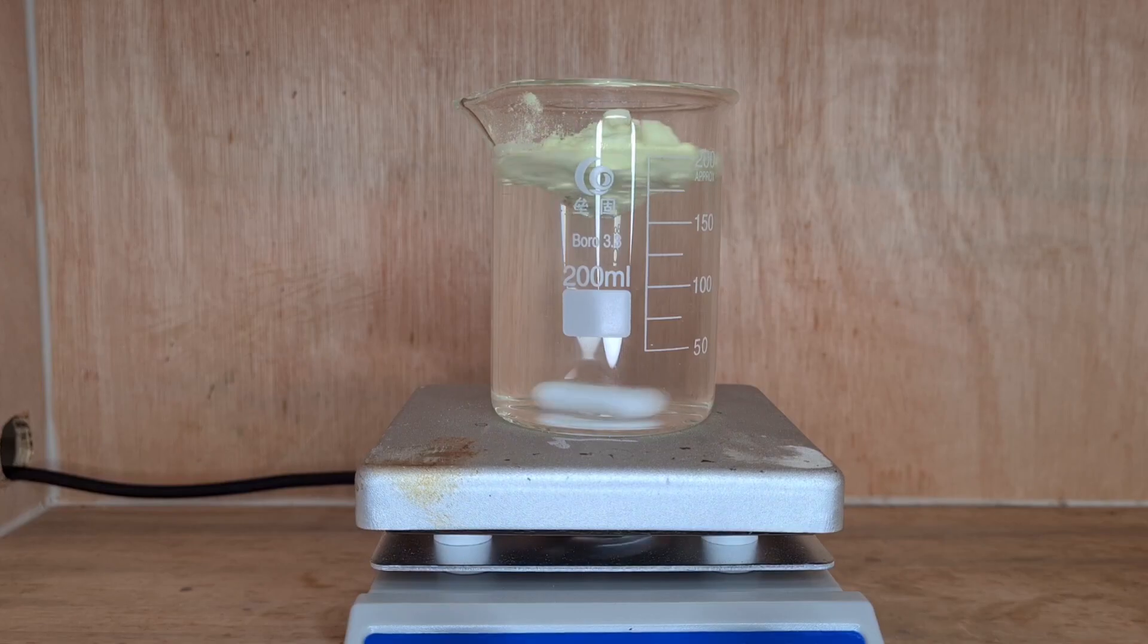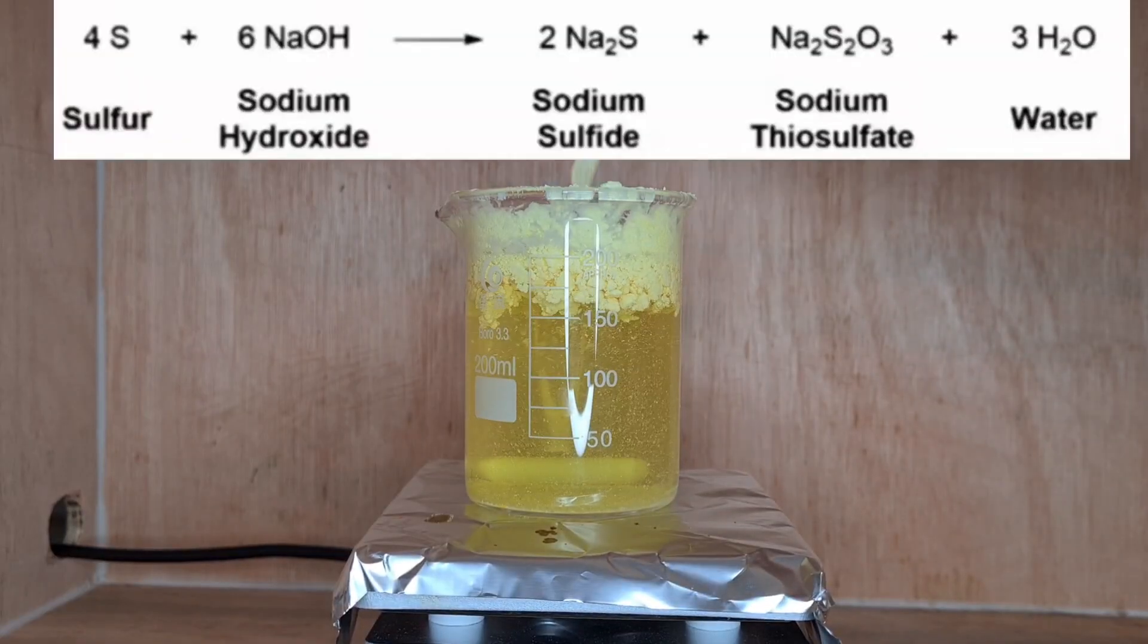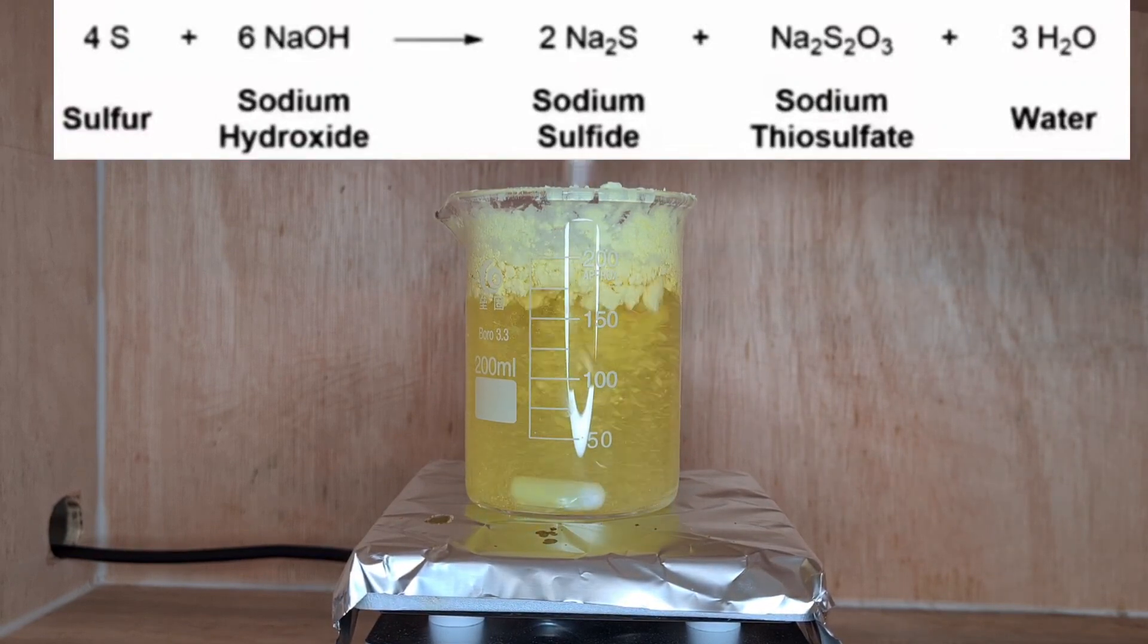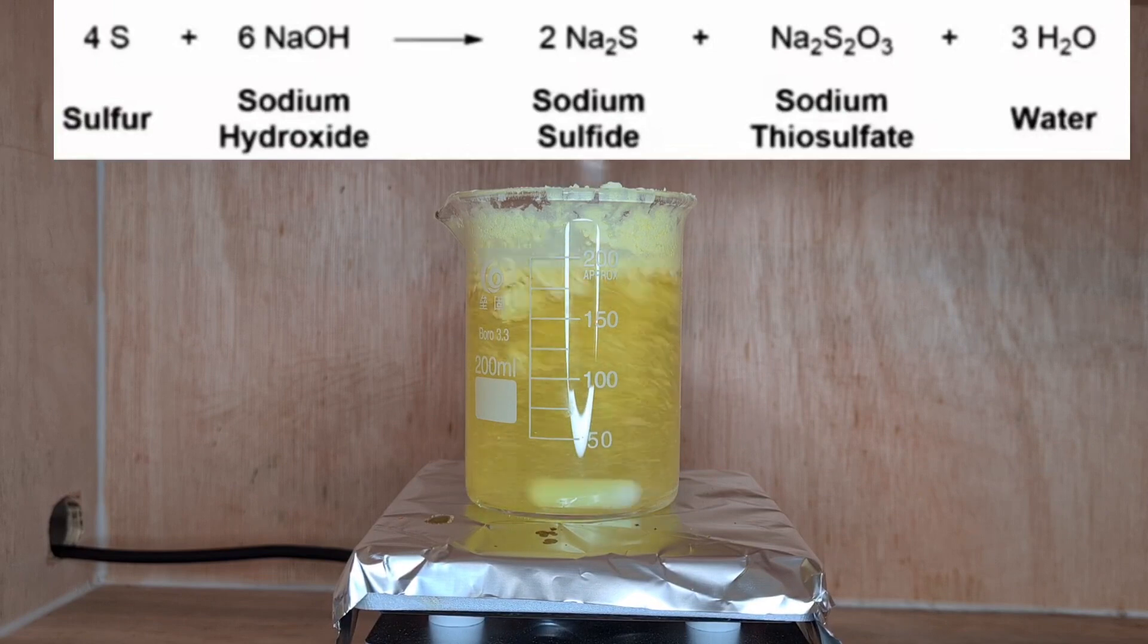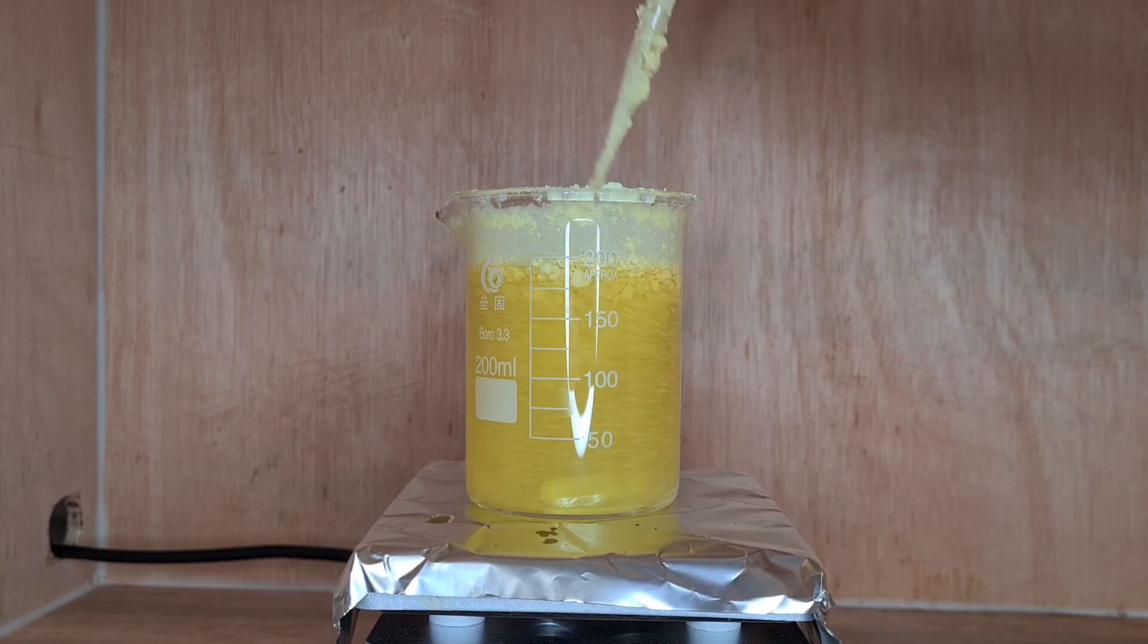Anyways, the sulfur kind of just floated on top and it was pretty annoying. Eventually the sulfur starts dissolving in solution, forming sodium sulfide. However, sodium sulfide is clear and this yellow color is actually from some polysulfides forming. One thing I forgot to mention is this reaction also forms sodium thiosulfate, and that's just an impurity.